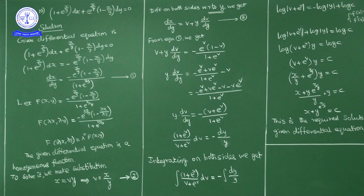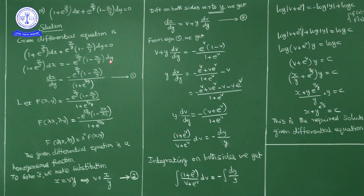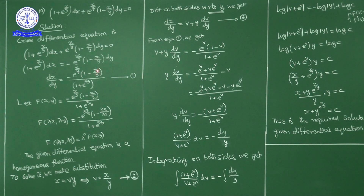We have to show that this differential equation is homogeneous and solve it. Rearranging, we write: (1 plus e^(x/y)) dx equals minus e^(x/y) into (1 minus x/y) dy. Dividing, dx/dy equals minus e^(x/y) into (1 minus x/y) upon (1 plus e^(x/y)). Notice this involves x/y form rather than y/x form.